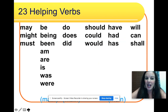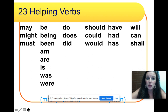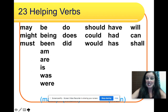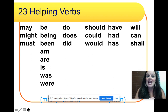There are 23 helping verbs: may, might, must; be, being, been; am, are, is, was, were; do, does, did; should, could, would; have, had, has; will, can, and shall. You'll see these helping verbs scooted up next to action verbs — they help the action verb make sense in the sentence.